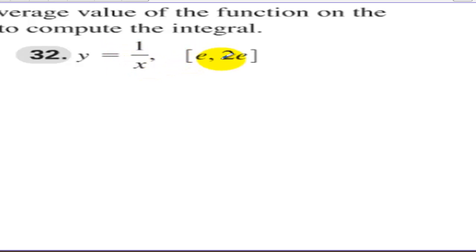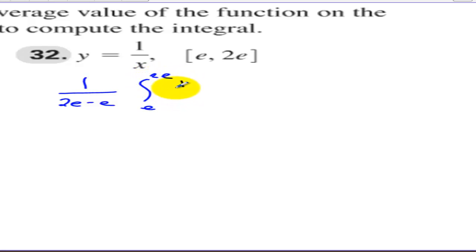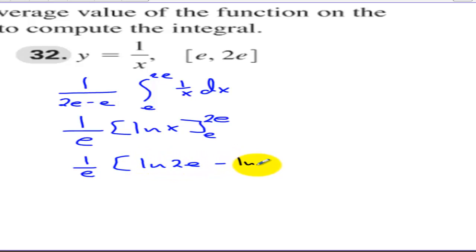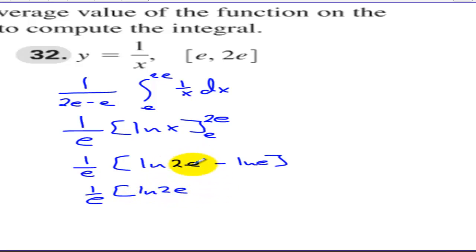For y equals 1/x on [e, 2e]: we have 1 over (2e minus e) times the integral from e to 2e of (1/x) dx. The antiderivative of 1/x is the natural log of x, so we have 1/e times (ln(2e) minus ln(e)), which equals 1/e times (ln(2e) minus 1). We'll leave the answer in this form.